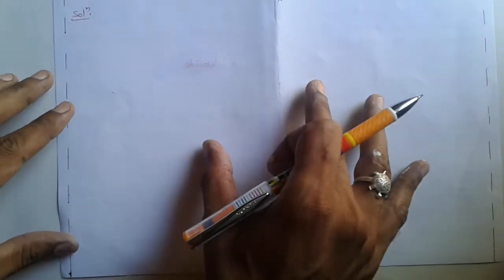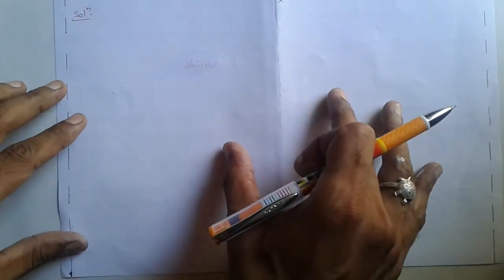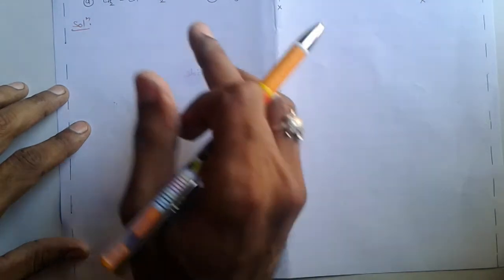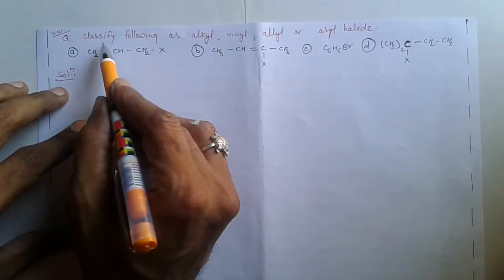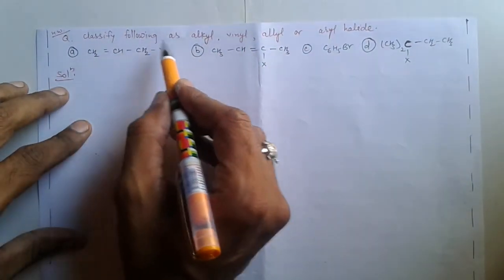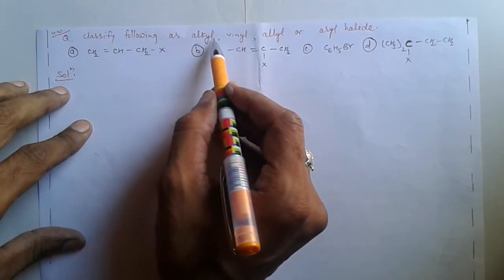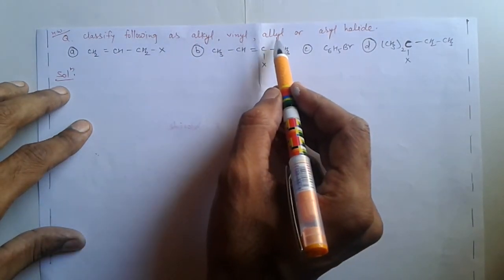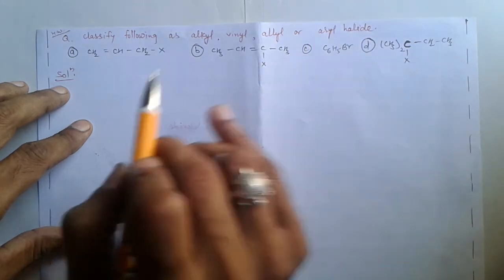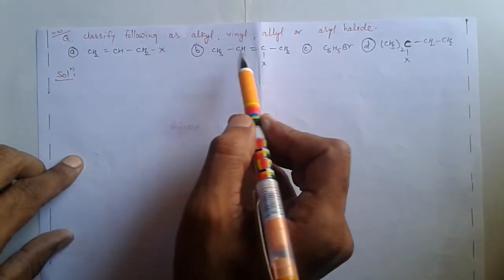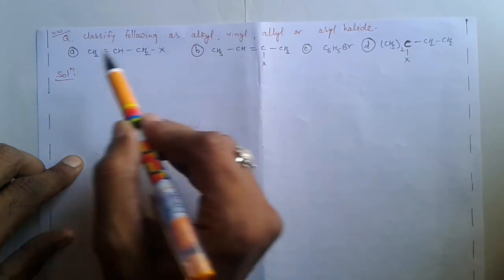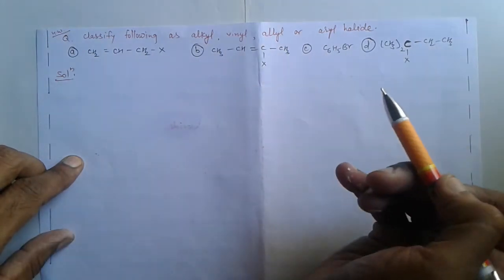For your next homework — a very important question — classify the following as allyl, vinyl, alkyl, or aryl halide: compound first, second, third, and fourth.